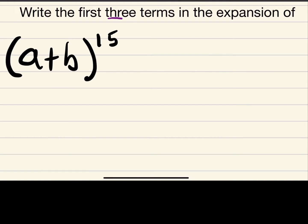Let's say we're asked to write the first three terms in the expansion of (a + b) to the 15th. Imagine trying to make a Pascal's triangle with up to 16 rows starting from zero — that would take a really long time. So instead, we know we want the first three terms, and each of those terms will have a and b together.